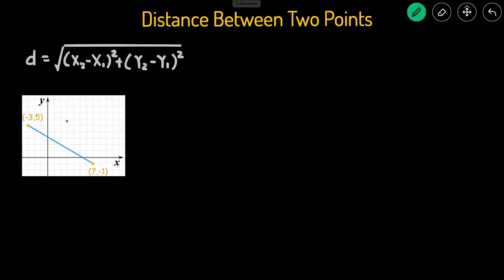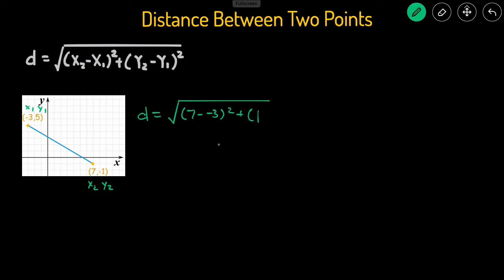Here's the next example. It doesn't matter which point we call 1 or 2. I'll just call the point on the right point 2. So this would be x2, y2, and then this would be x1 and y1. Then we can just use this equation. Distance is equal to the square root of x2, which is 7, minus x1, which is negative 3, squared, plus y2, which is negative 1, minus y1, which is 5, squared.